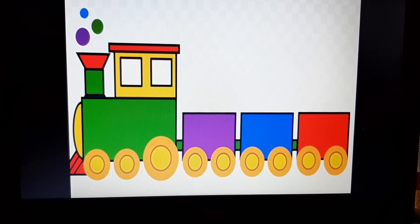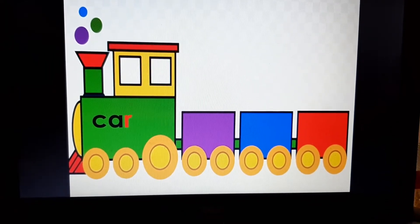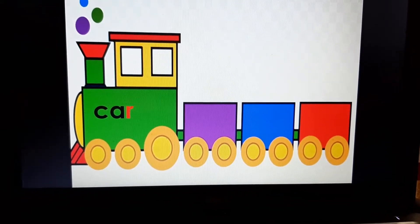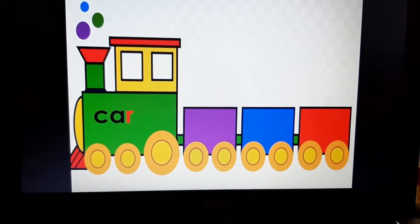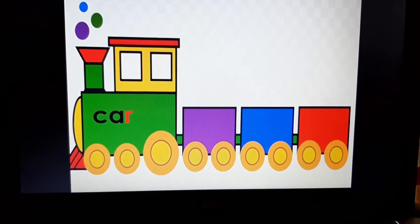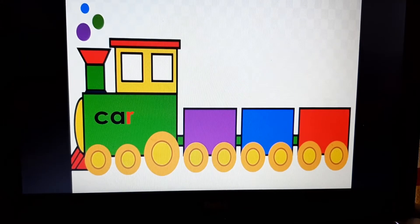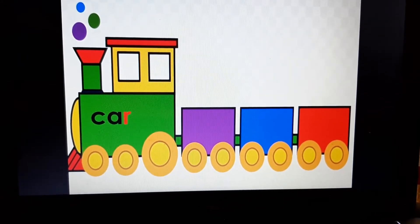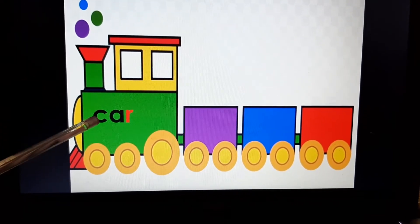And you know how? See, this is the first word and it is written in the engine of the train. Okay, now what you have to do? You have to look at the last letter of this word. Like, this is a car.